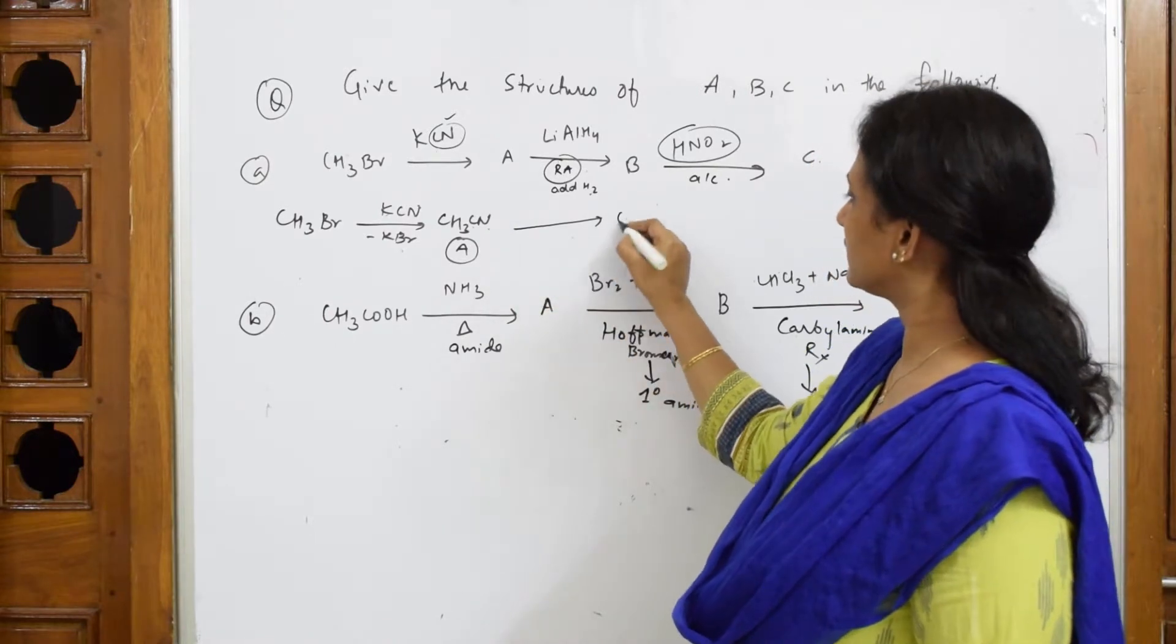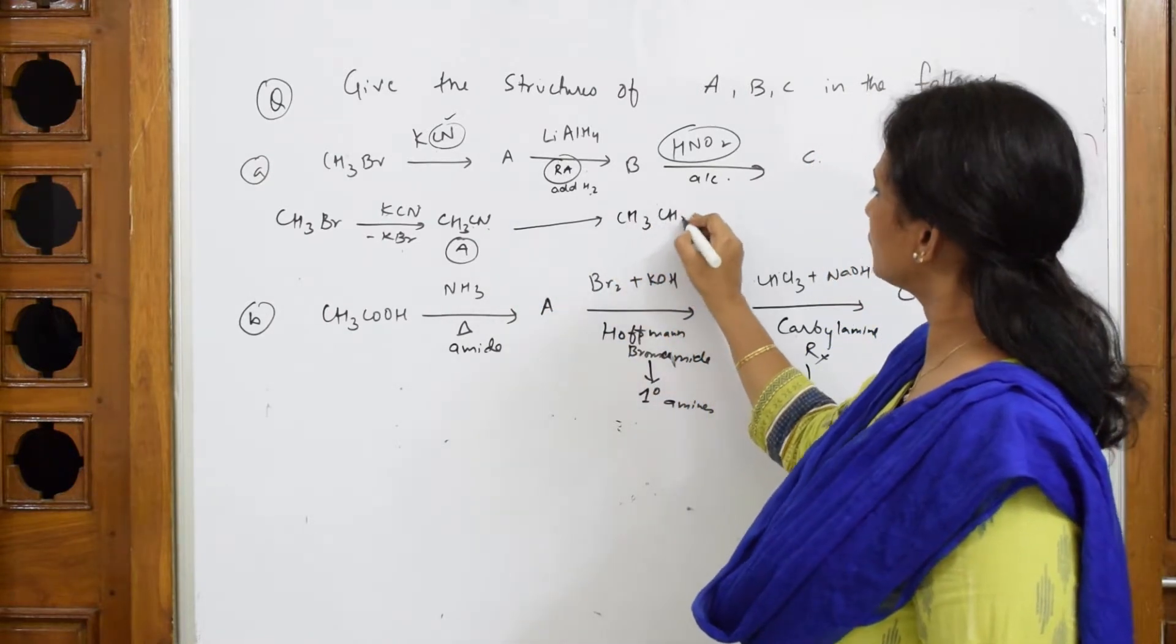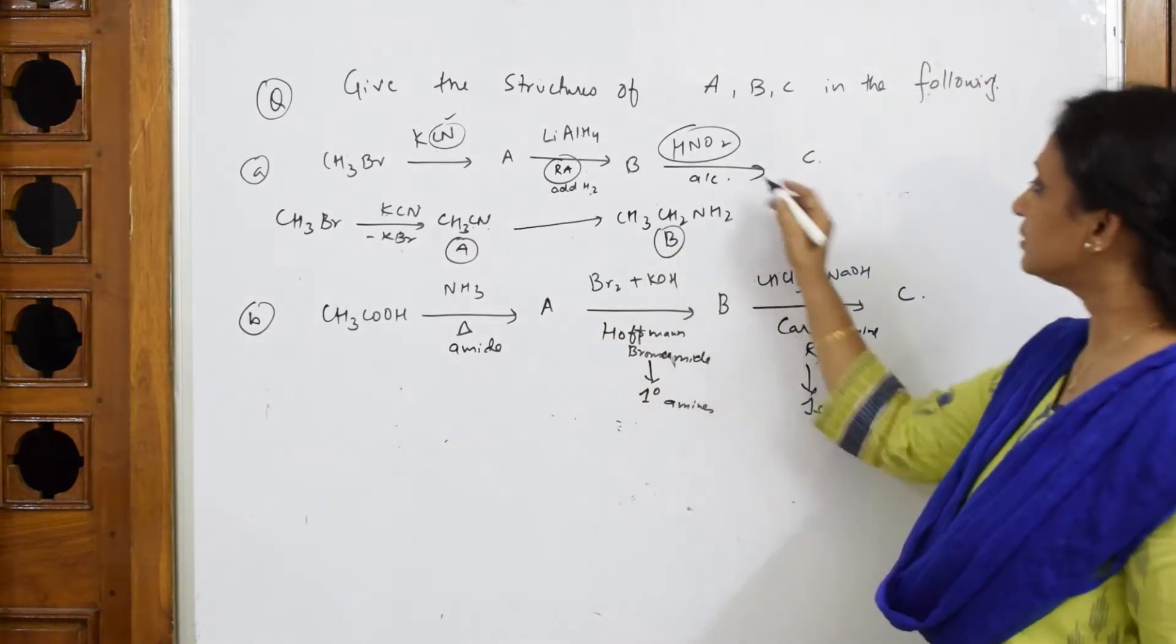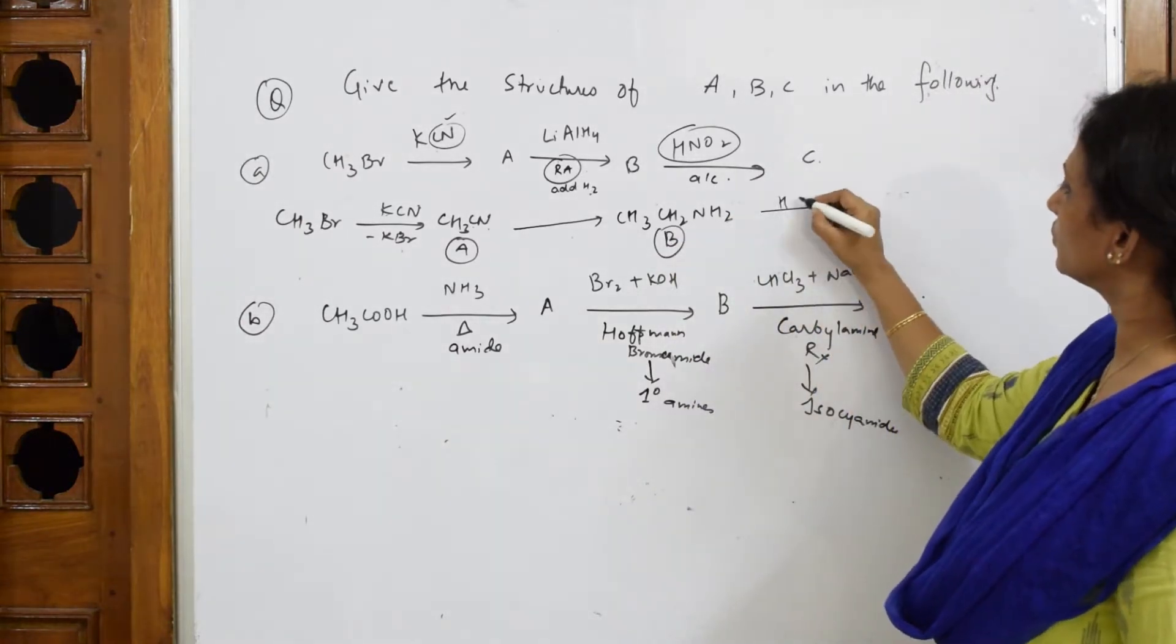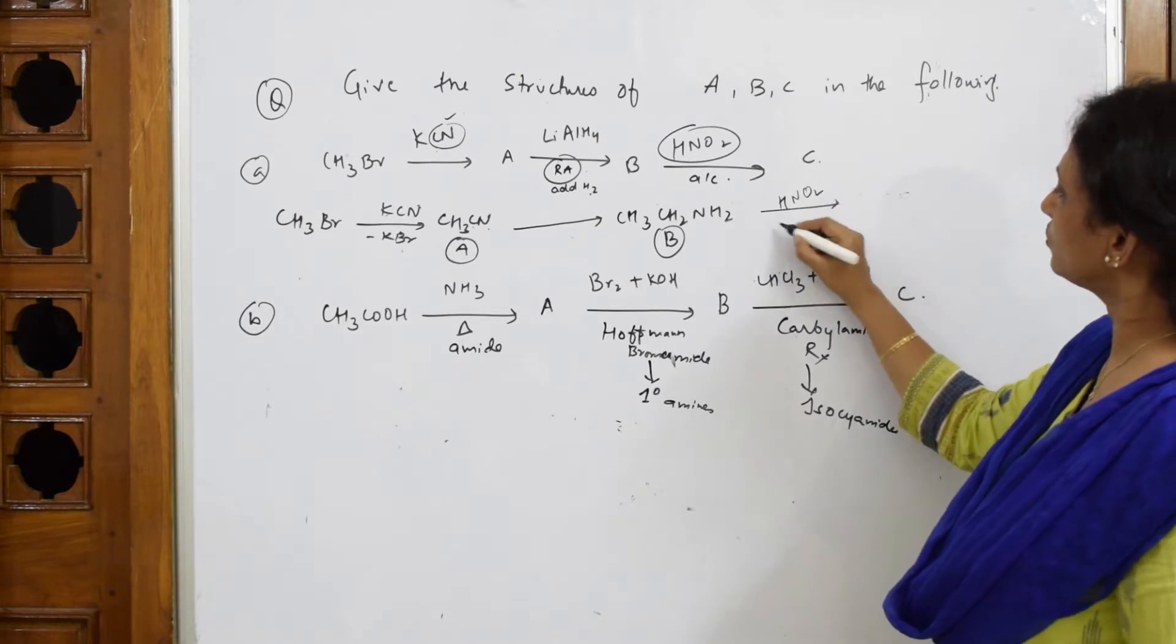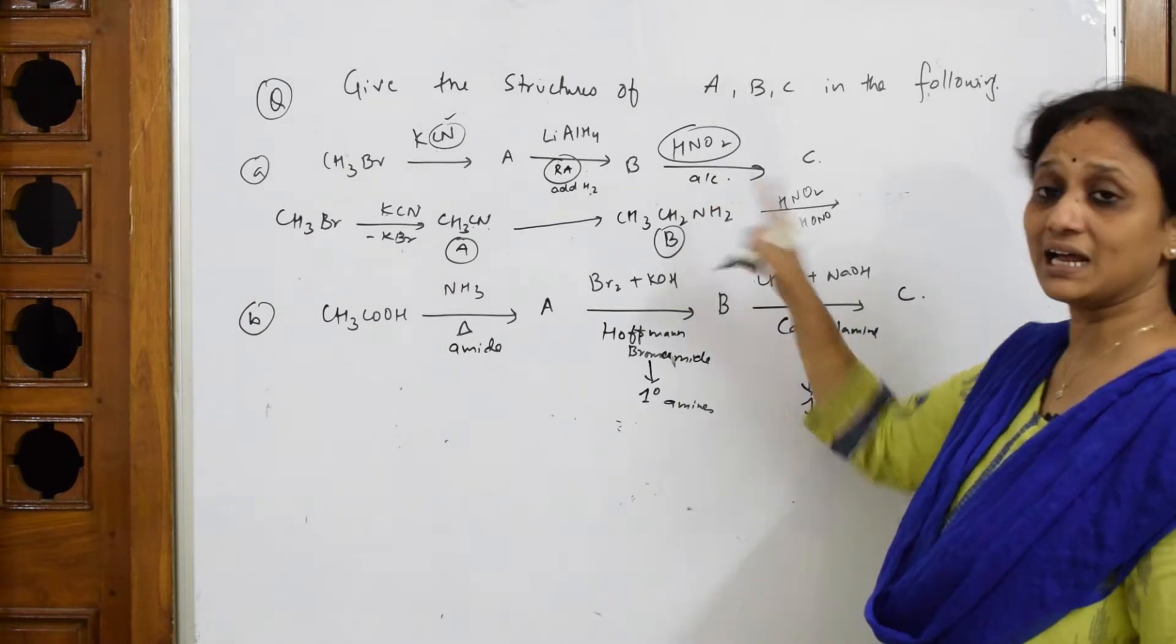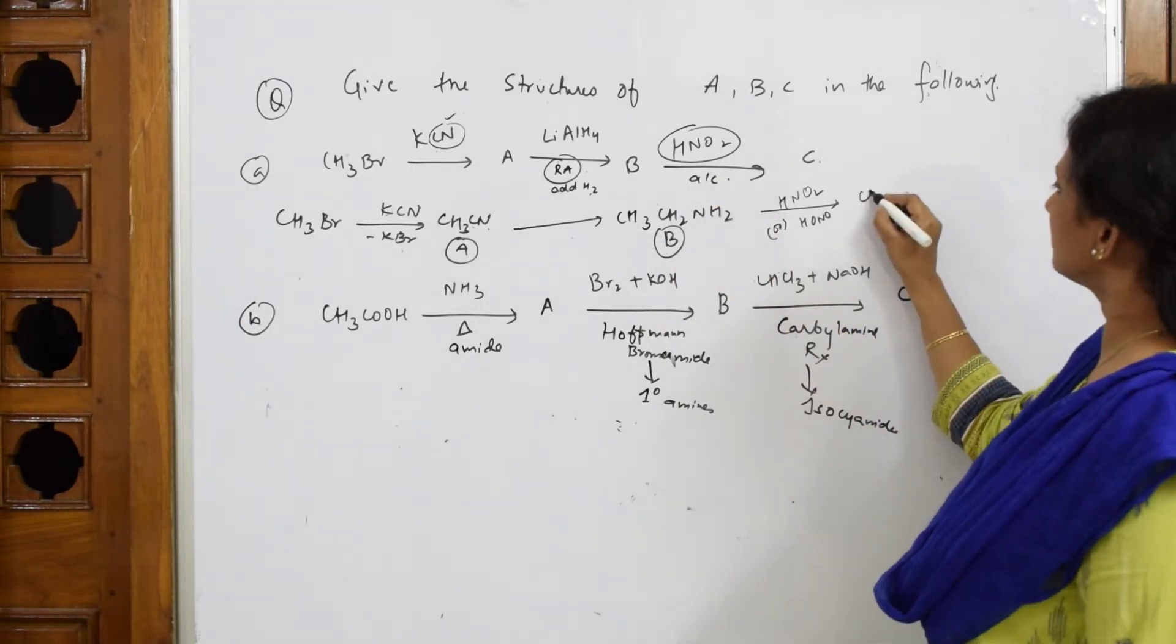So CH3CH2NH2 - this is your compound B. Further I'm going to take with HONO. This is HNO2 or HONO. I said what are they going to prepare? They're going to prepare alcohols always. So take this compound directly and write alcohol. This is compound C, simple.